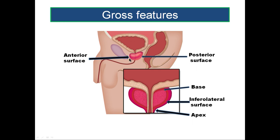It has an anterior surface and a posterior surface. The anterior surface is much more convex transversely when compared to the posterior surface, which is flatter. It has a base above and an apex below, with the apex directed towards the urethra — that is the lowermost end of the prostate.